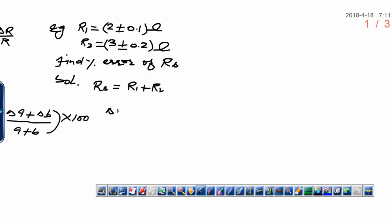Now, if you need to calculate the percentage error of series resistor, that can be written as error in series divided by absolute value into 100, which is equal to delta R1 plus delta R2 whole divided by R1 plus R2 into 100.